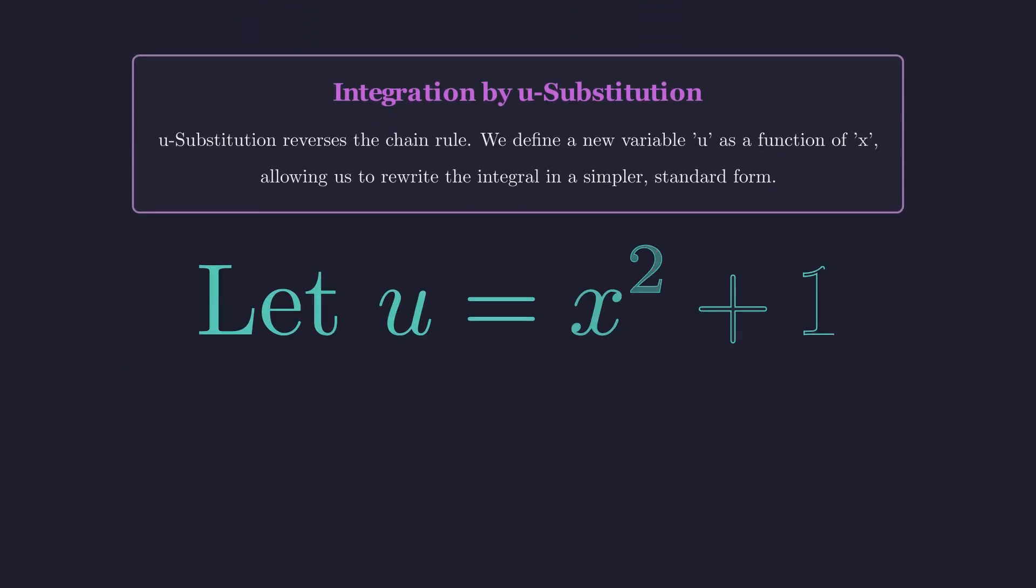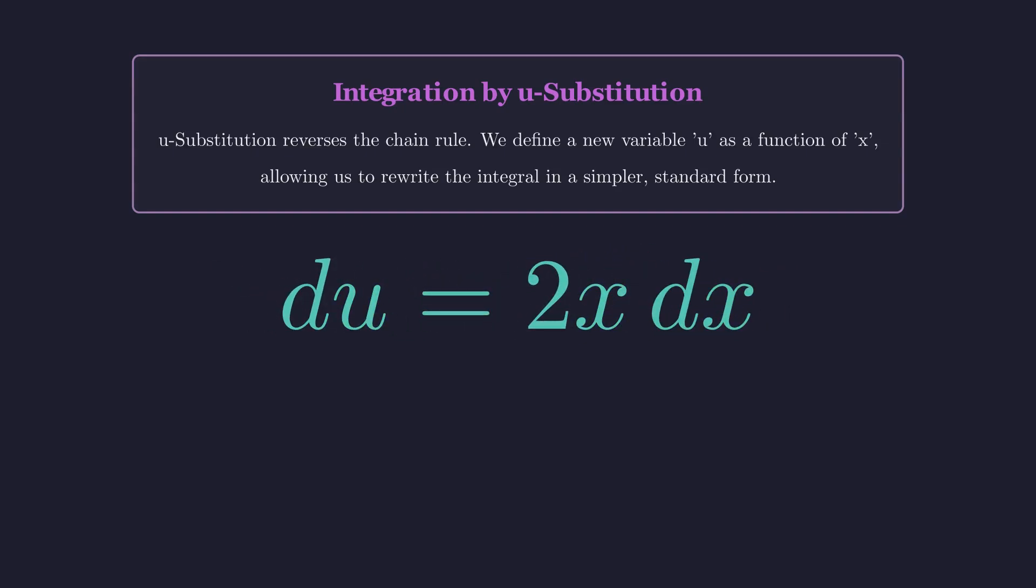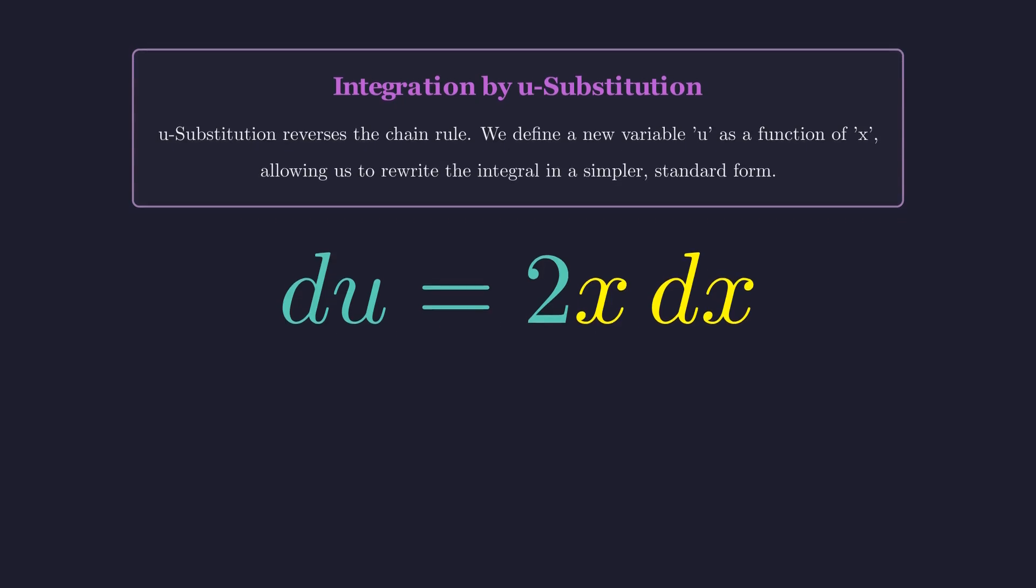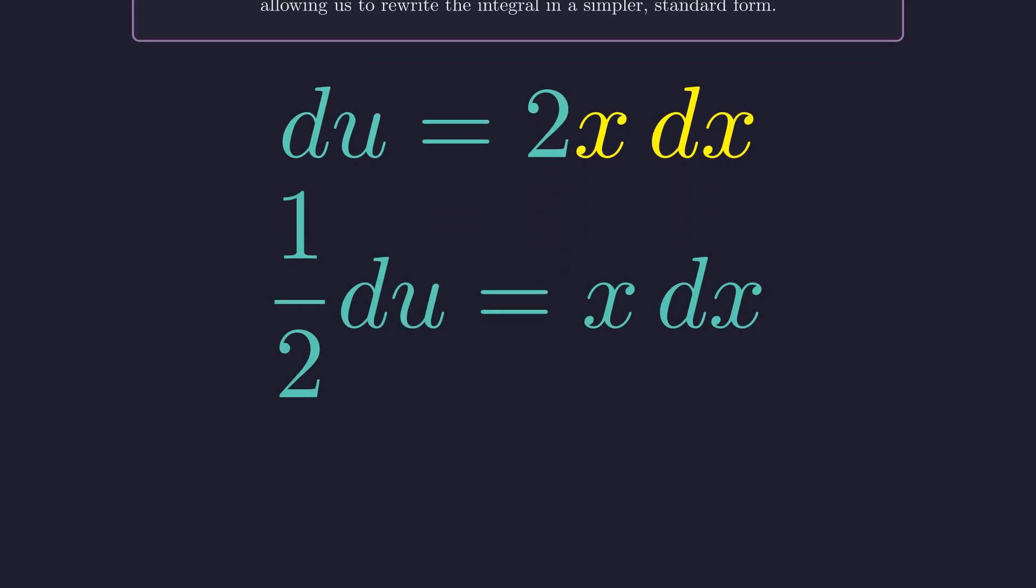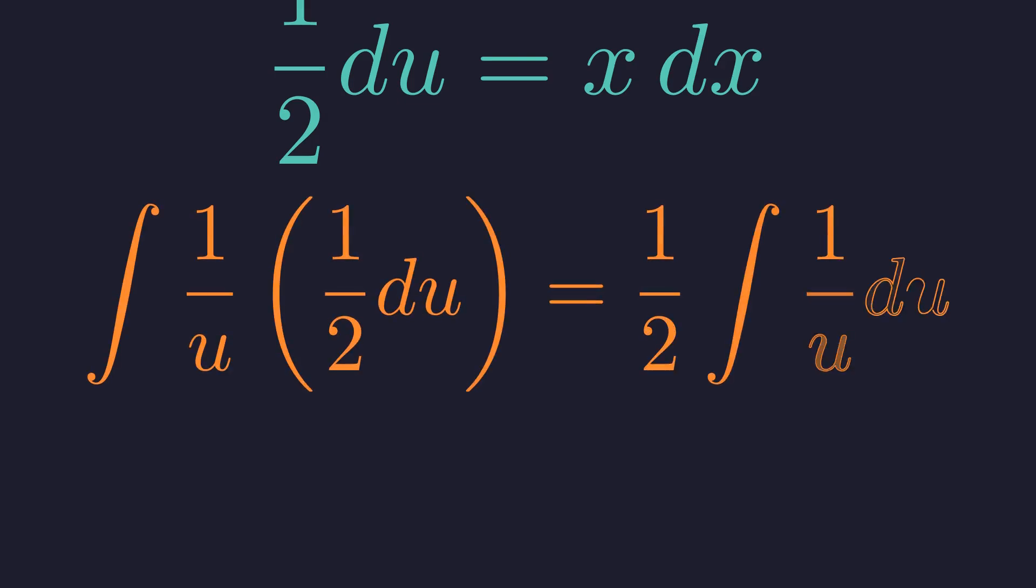We let u equal x squared plus 1, the denominator. Taking the differential, du equals 2x dx. We need x dx, so we solve for it: x dx is 1 half du. Making the substitution, we get 1 half times the integral of 1 over u du.